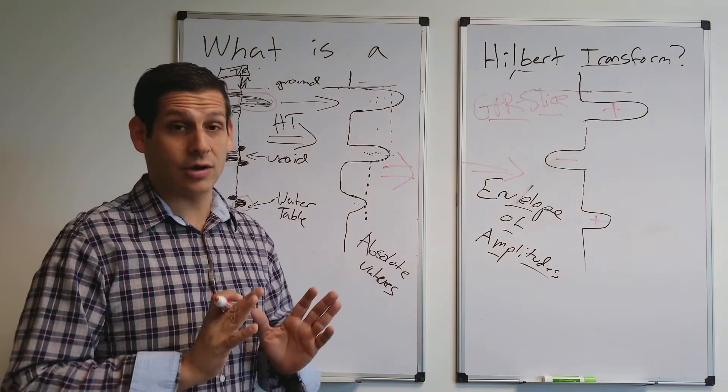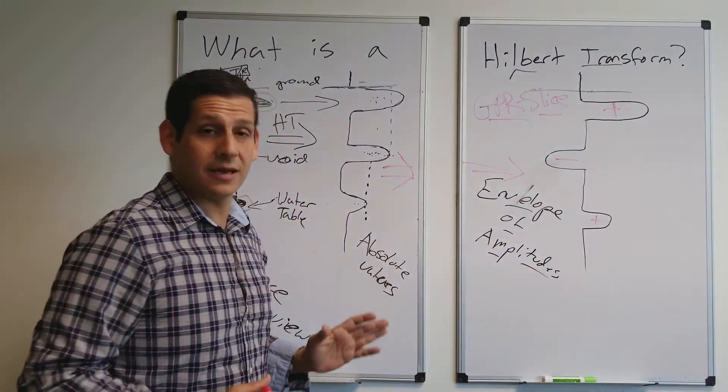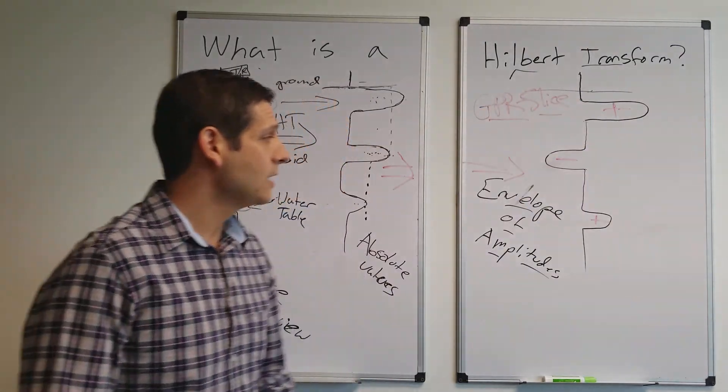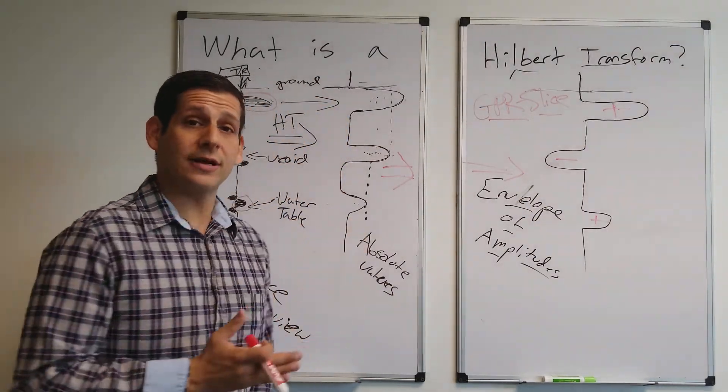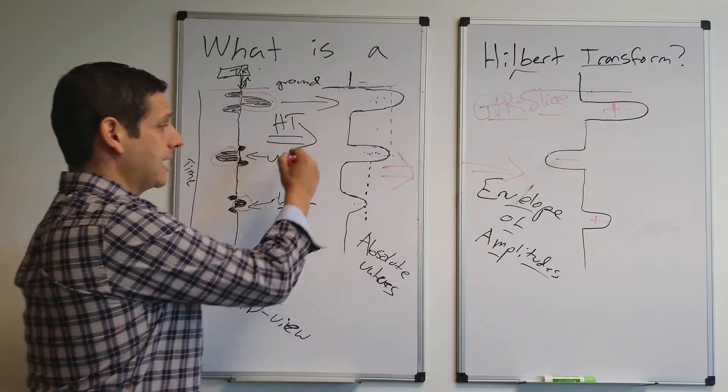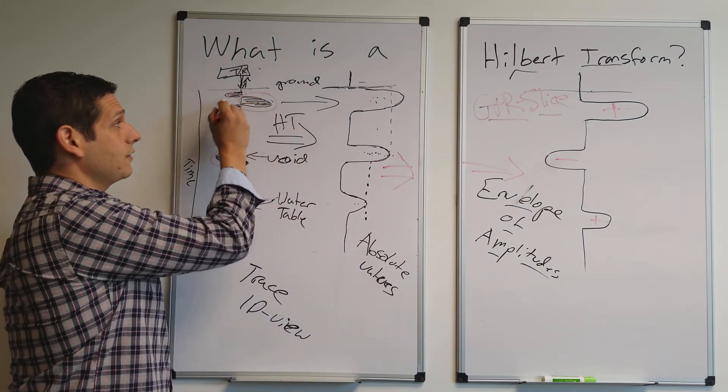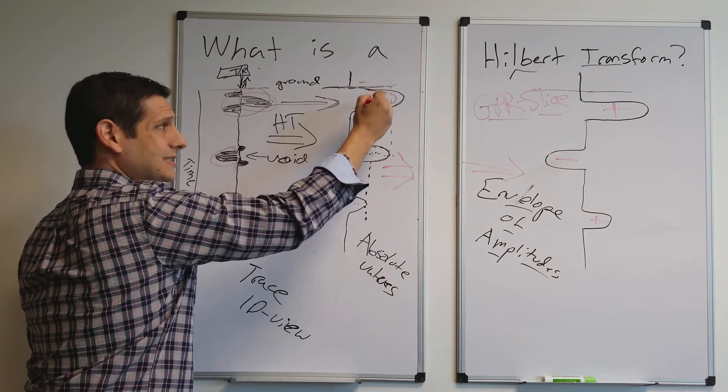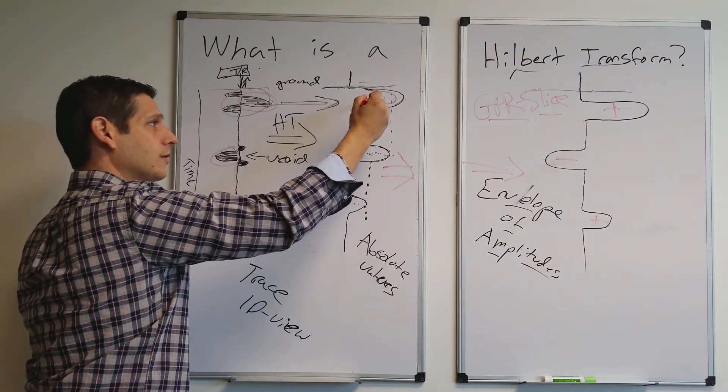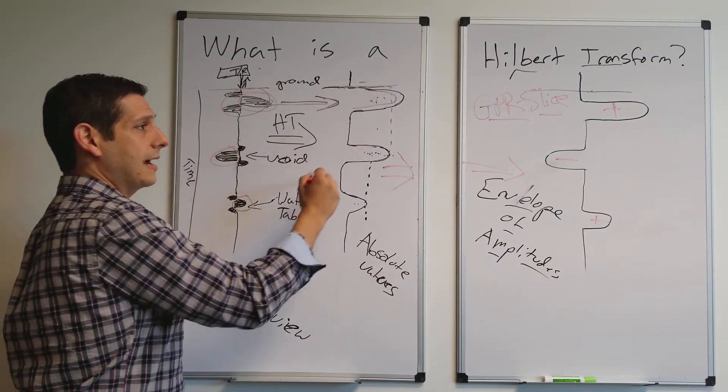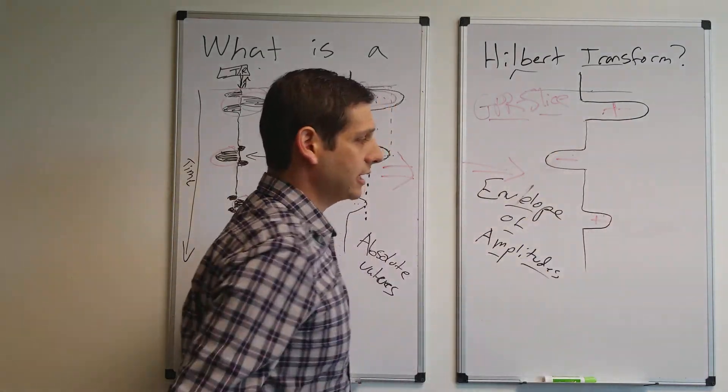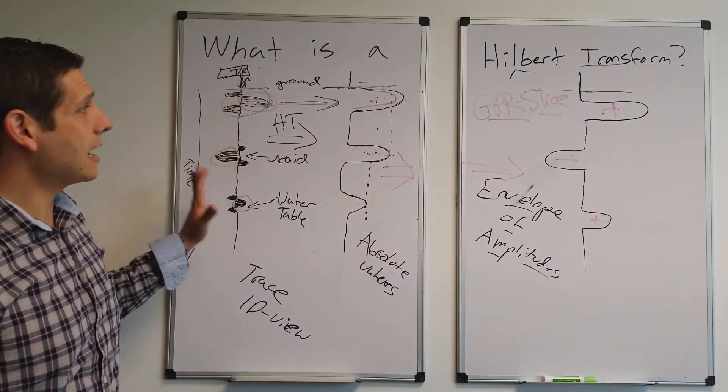Incredible, incredible benefit, huge, helpful benefit for being able to retain this. So that's what the Hilbert transform is. It takes the envelope of all of this and produces something that looks like this, right? So it's a single response for the total amplitude. Now, at least within GPR Slice, it will retain the polarity as well. So that's how it works. That's what it is.